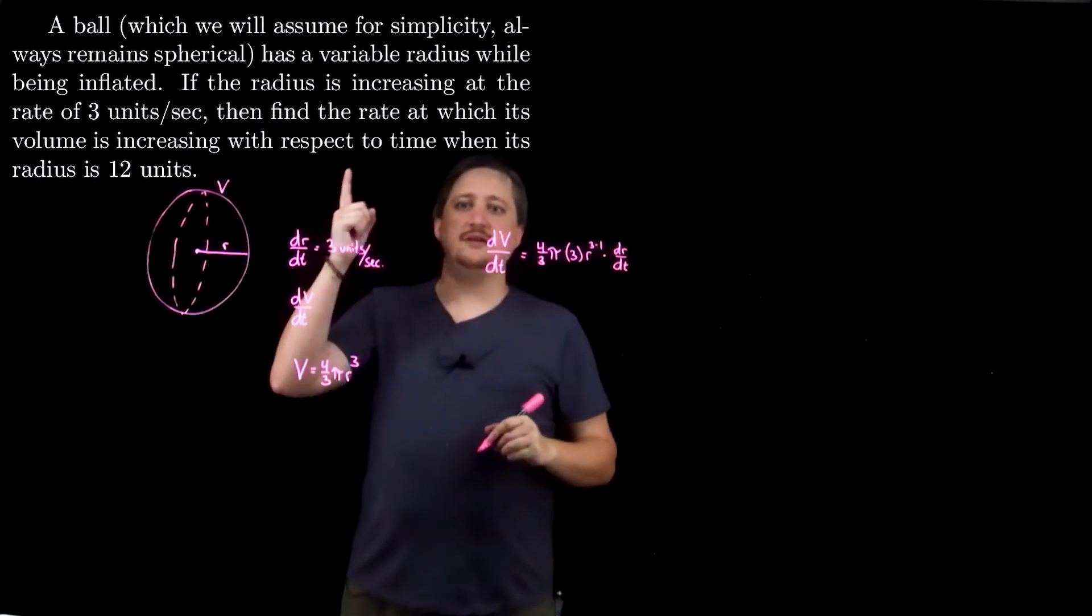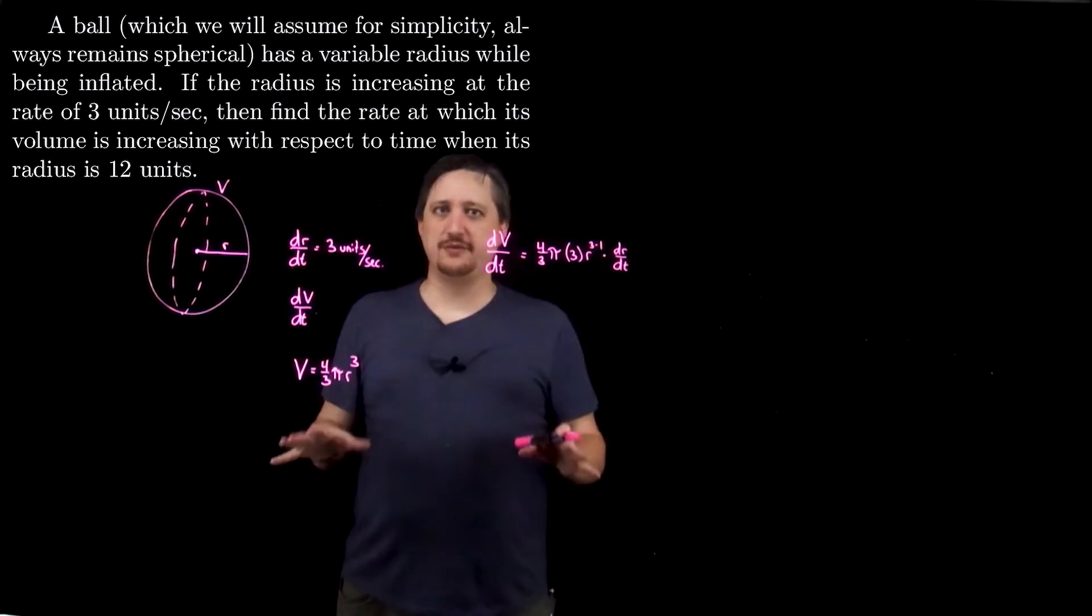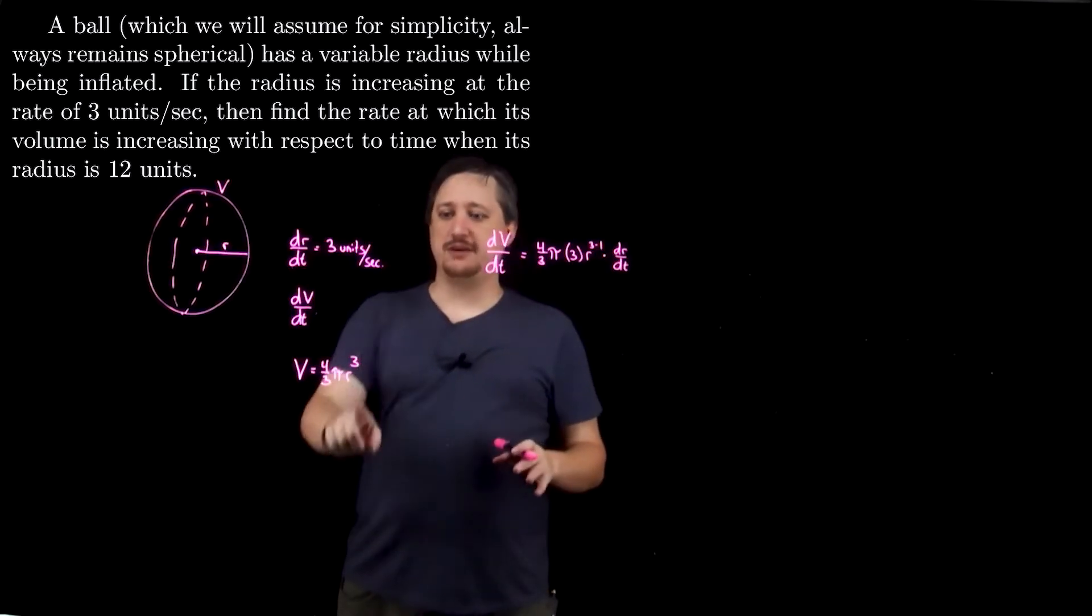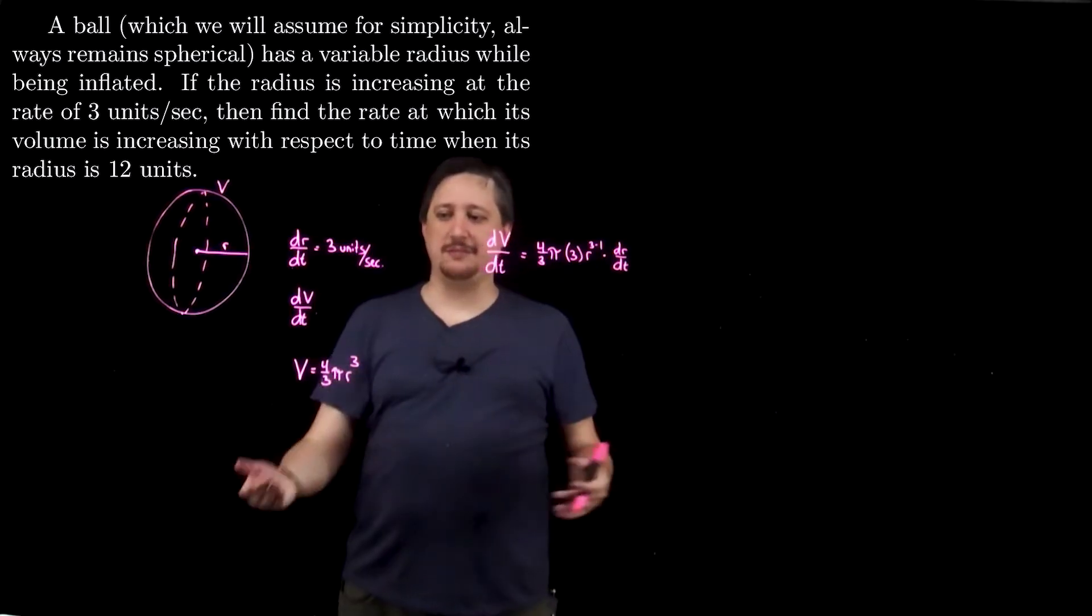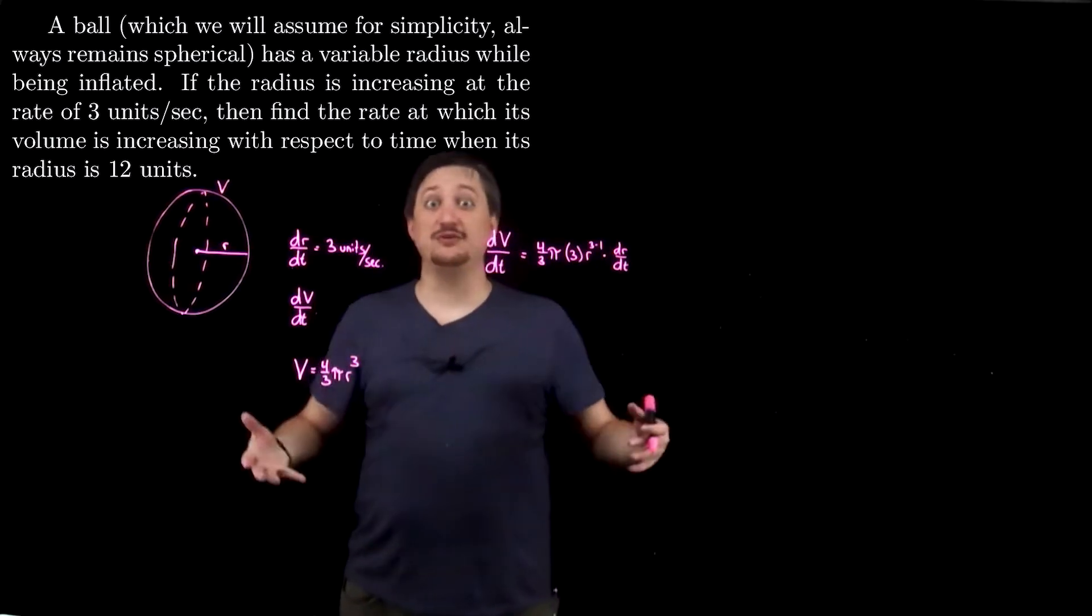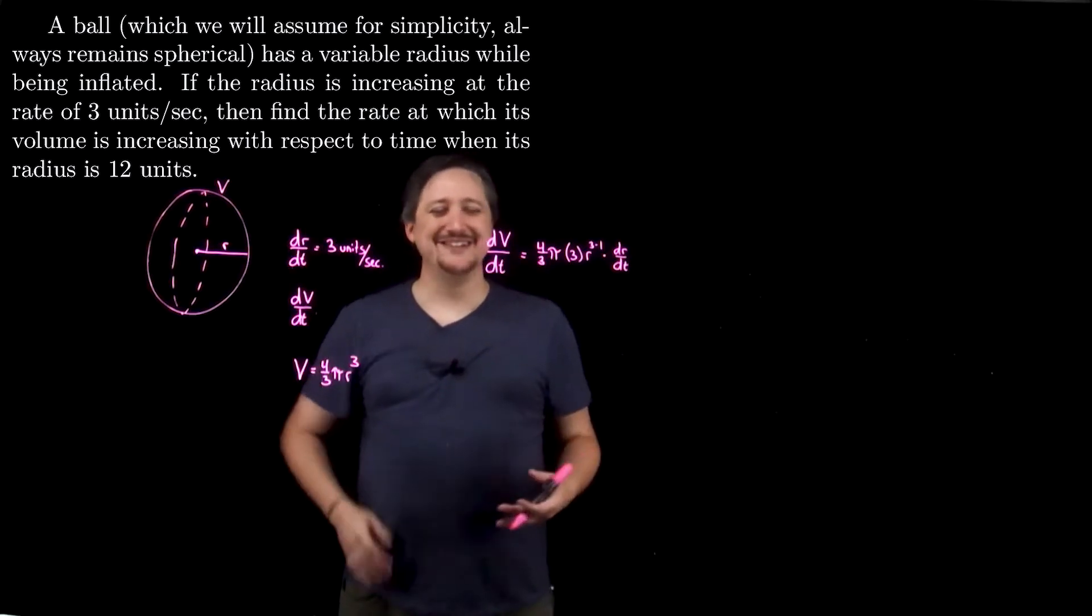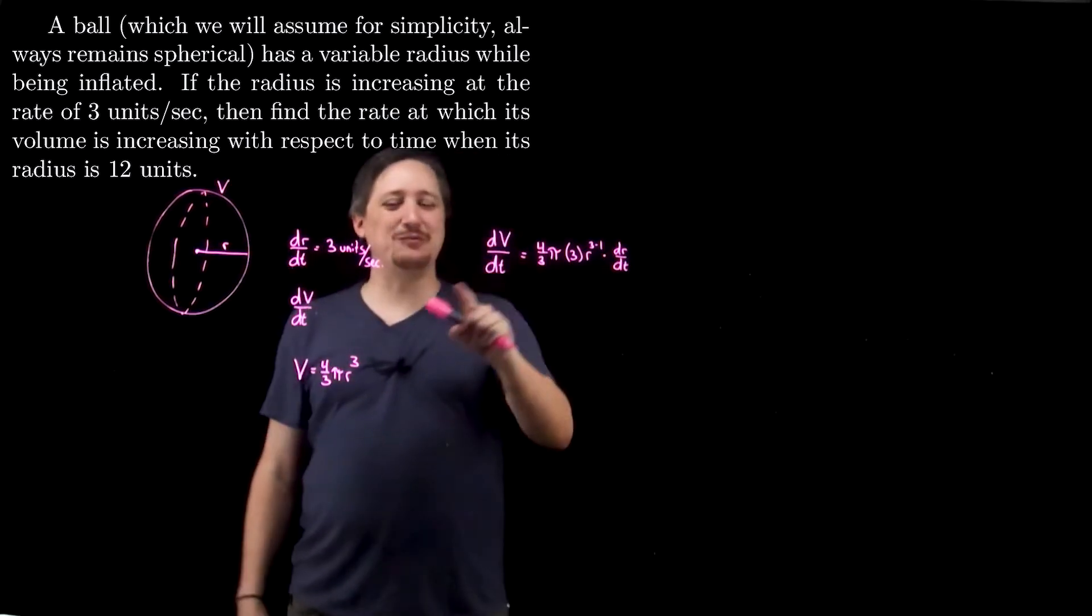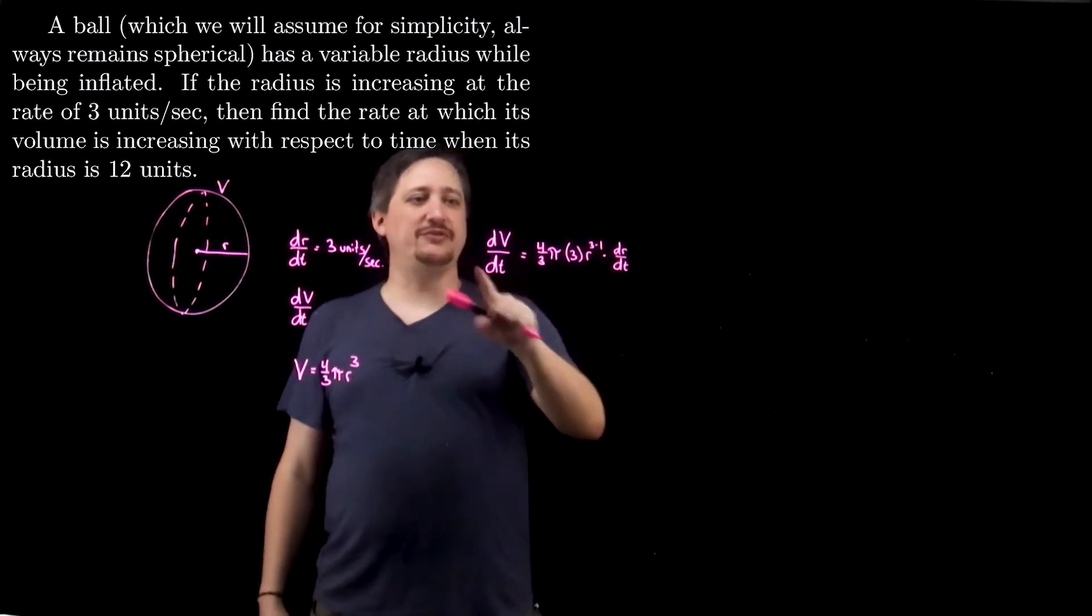Now notice, even though it told me that the radius is 12 units when I want to do it, I'm not using any of that information yet, and that's actually important. Because if I had plugged in a 12 here and taken a derivative, all of this would have been constant, and my dV/dt would have been 0, which means it's never gaining volume, which is a little weird for something inflating, right?